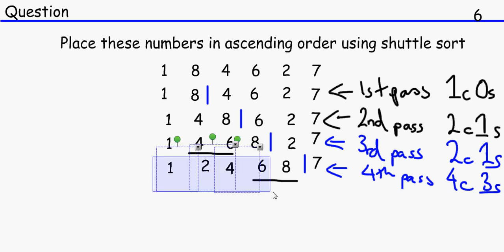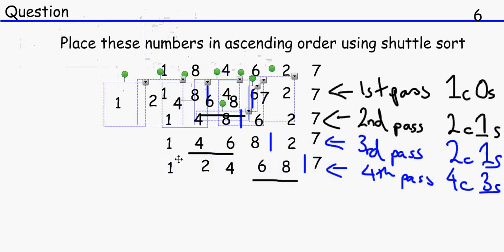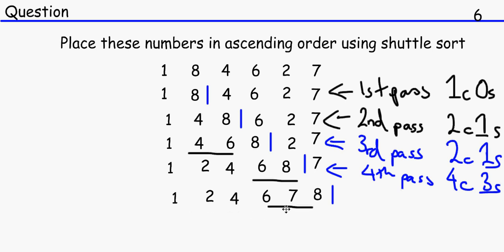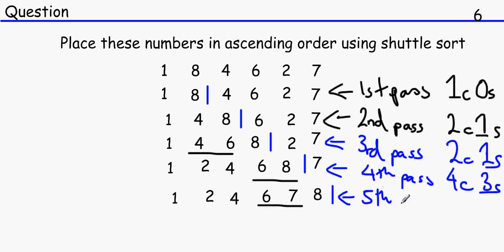For the fifth pass, all we need to do is compare the first six numbers. We compare the last two: eight and seven — that's not in ascending order, so we swap. That's our first comparison and first swap. Since this number has changed, we compare six and seven — that doesn't change. So we do not need to compare any further, since the computer already knows they are in order. The fifth pass has two comparisons and one swap.